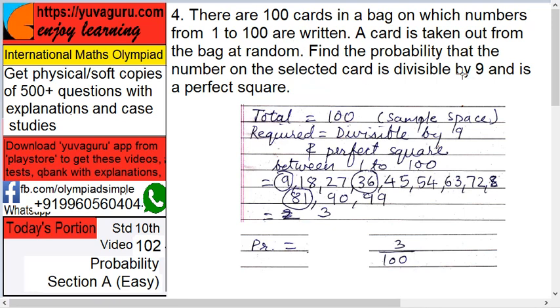See, our problem is simple. 100 cards in a bag, 1 to 100 is written on them. It should be divisible by 9 and is a perfect square.